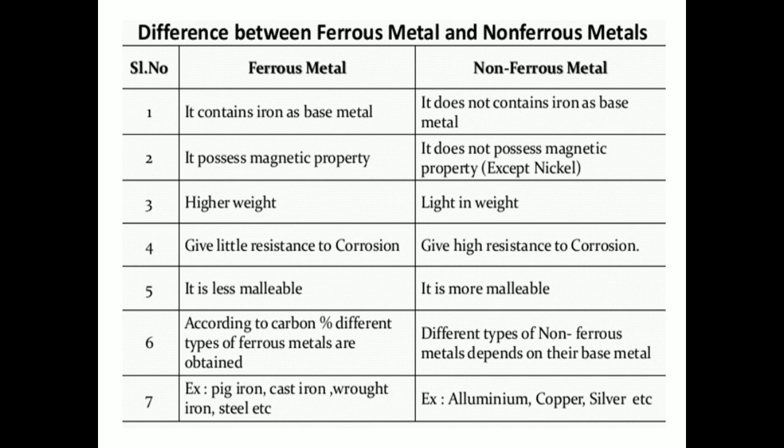Ferrous metals are less malleable, whereas non-ferrous metals are more malleable. Different types of ferrous metals are obtained according to carbon percentage, whereas different types of non-ferrous metals depend upon their base metal. Examples of ferrous metals are pig iron, cast iron, wrought iron and steel. Examples of non-ferrous materials are aluminium, copper and silver.